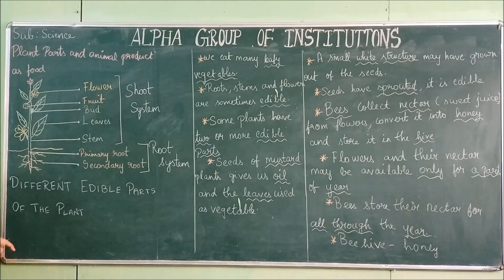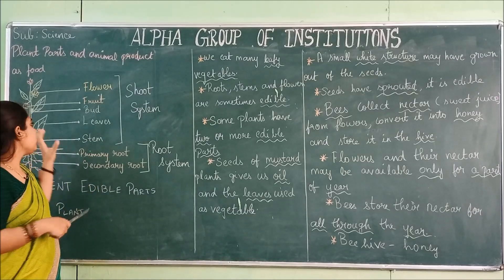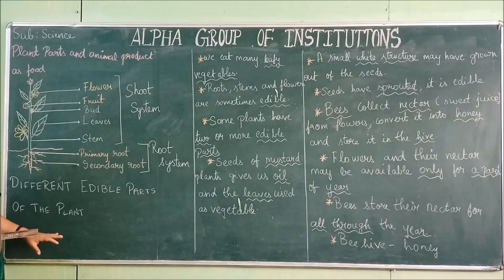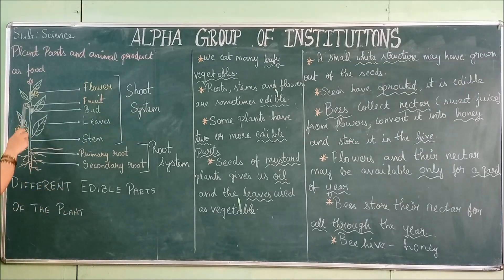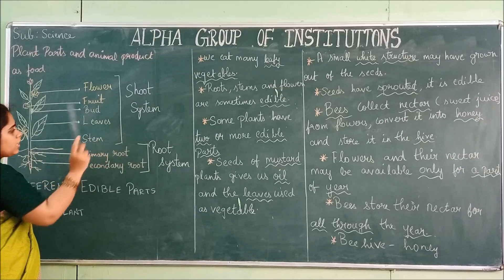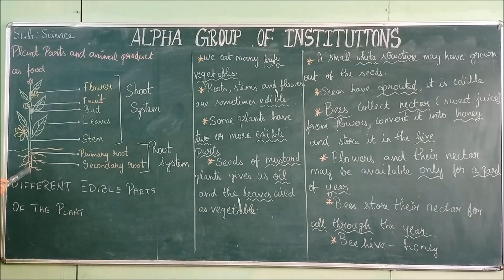Now we are going to see the different parts of plants and their food uses. We get food from plants and animals. For plants, we should see what parts are present and which parts we use as food. A plant has a stem, leaf, bud, fruits, and flower — together called the shoot system. It also has a primary root and secondary roots.